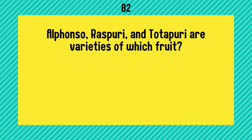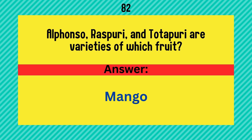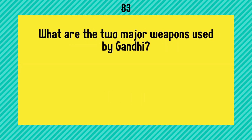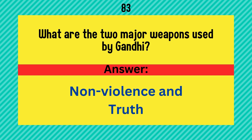Alphonso, Raspuri, and Dota Puri are varieties of which fruit? Answer is mango. What are the two major weapons used by Gandhi? Non-violence and truth.